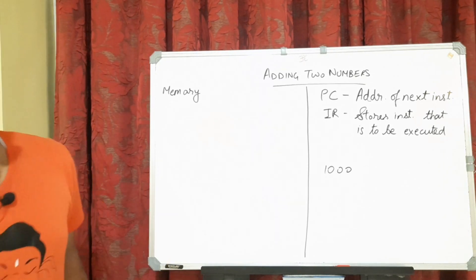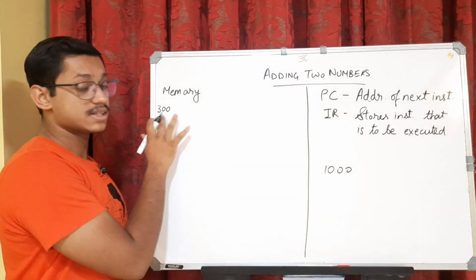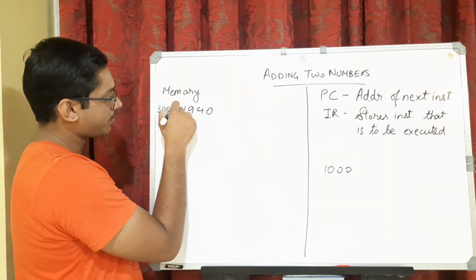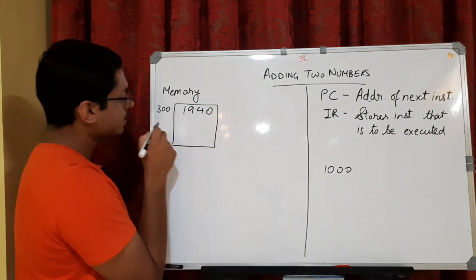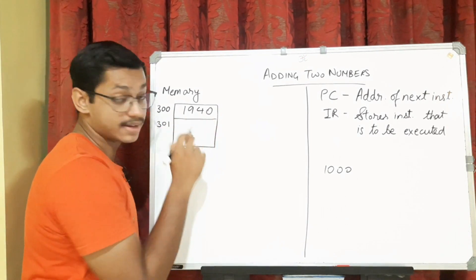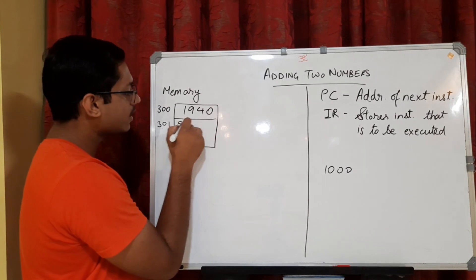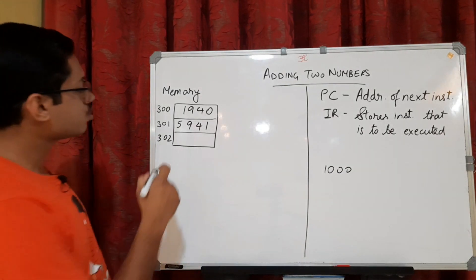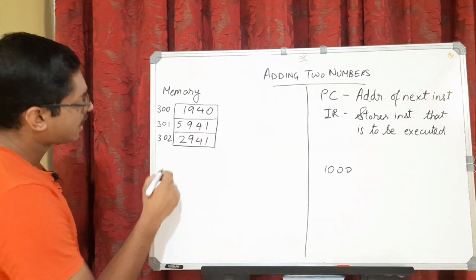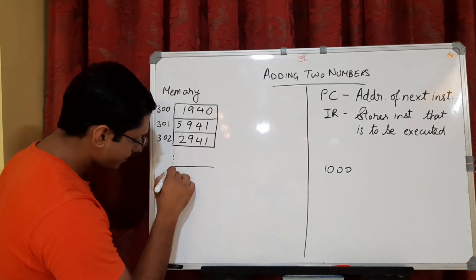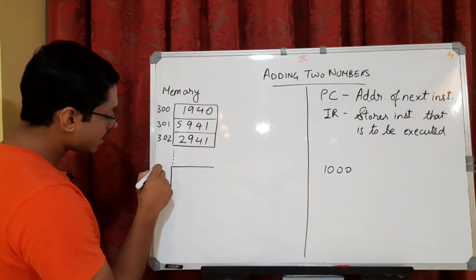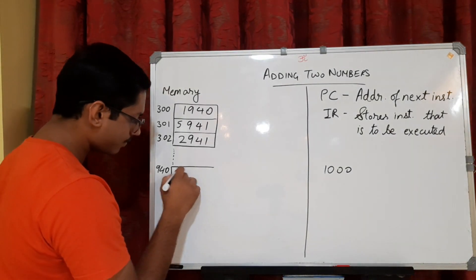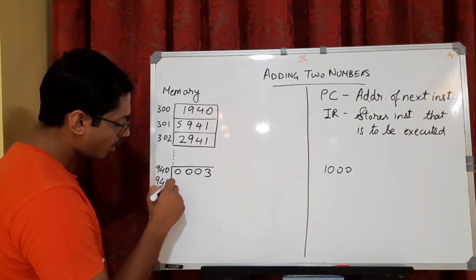Let us consider that at memory address 300, the value 1940 is stored. At address 301, the value 5941 is stored. At address 302, the value 2941 is stored. Further along, at address 940, the value 0003 is stored, and at address 941, the value 0002 is stored. In the registers, the program counter currently holds the address 300 in step 1. The IR and the accumulator are also relevant here — the accumulator stores results after arithmetic calculations.